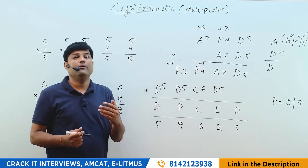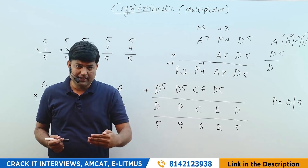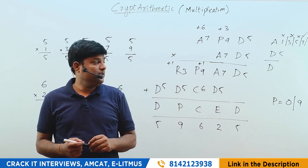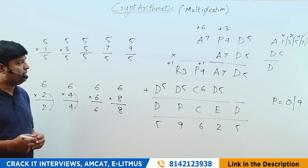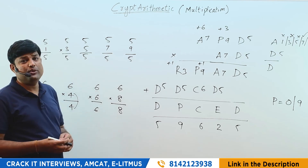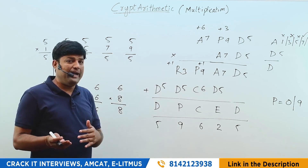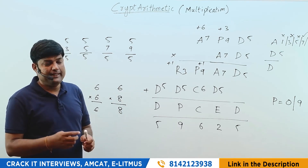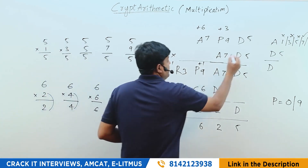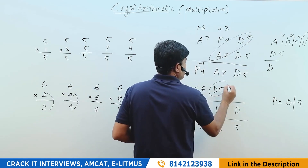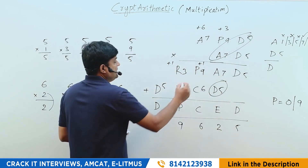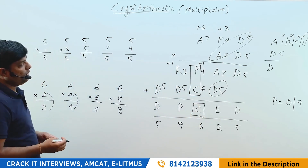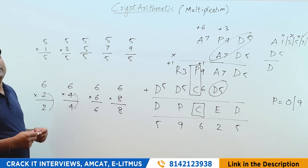Whenever you get matching values, you know you're on the right track. This is the first multiplication problem we have done. Please rewind this video and watch three or four times — the basic hints will help you. To summarize: the first hint was A×D=D, and the second hint was P+C=C. These two hints cracked the whole question.